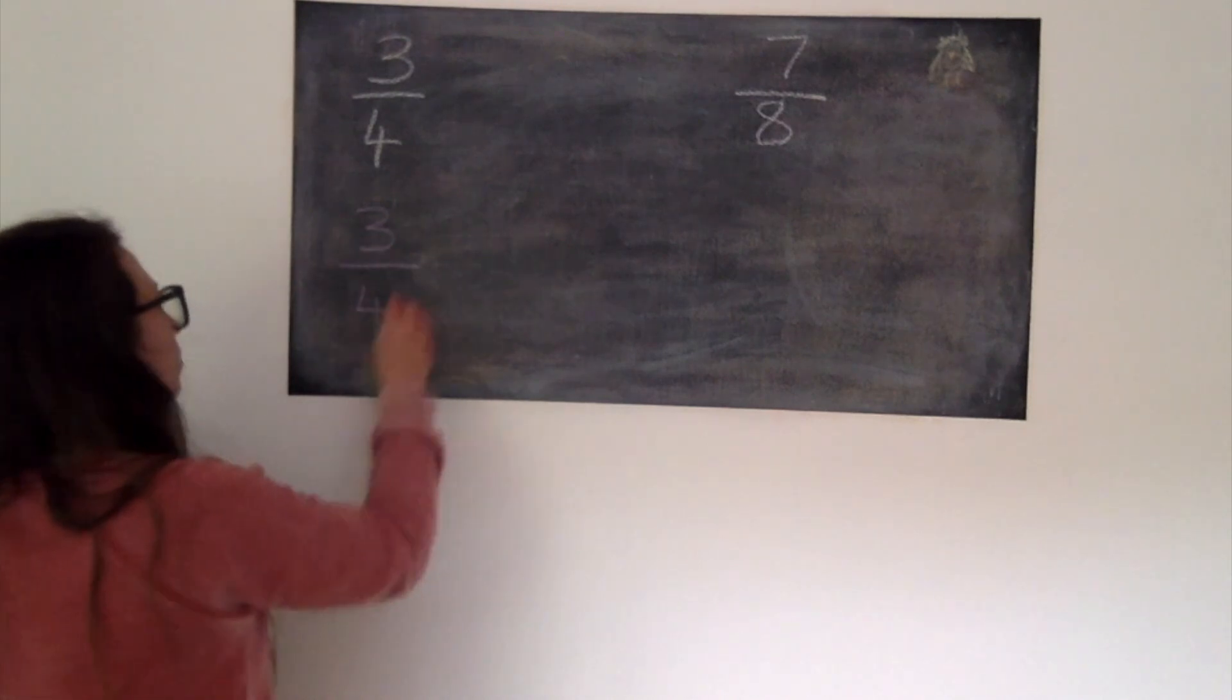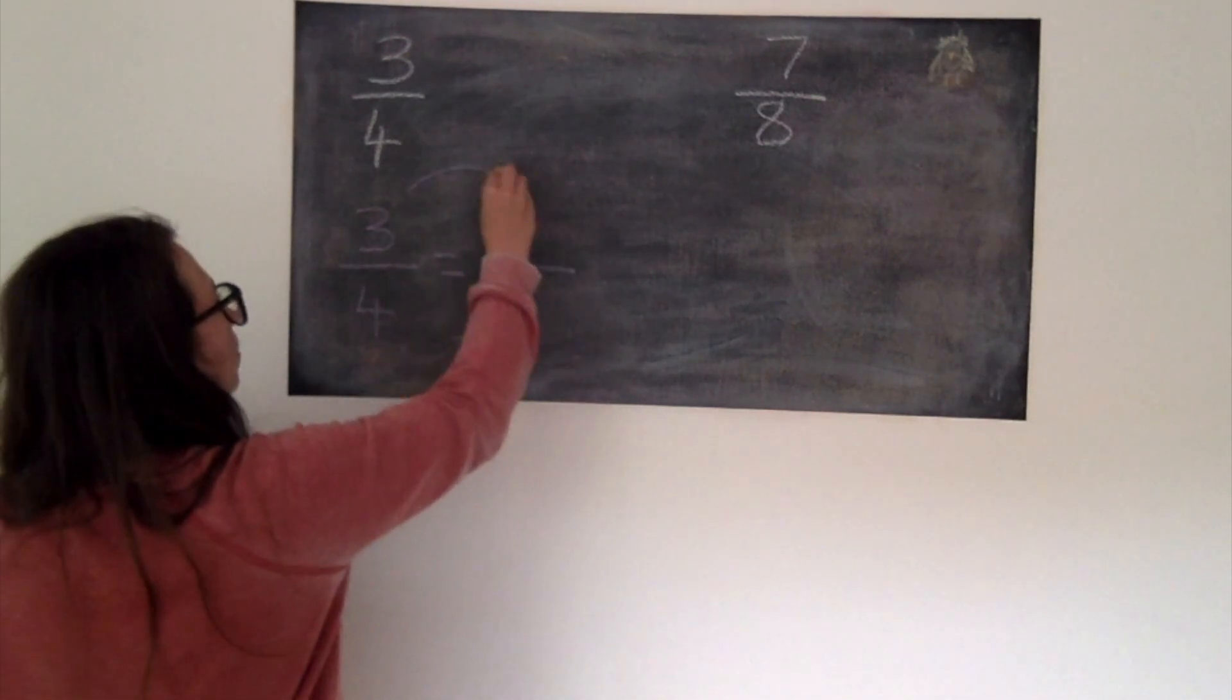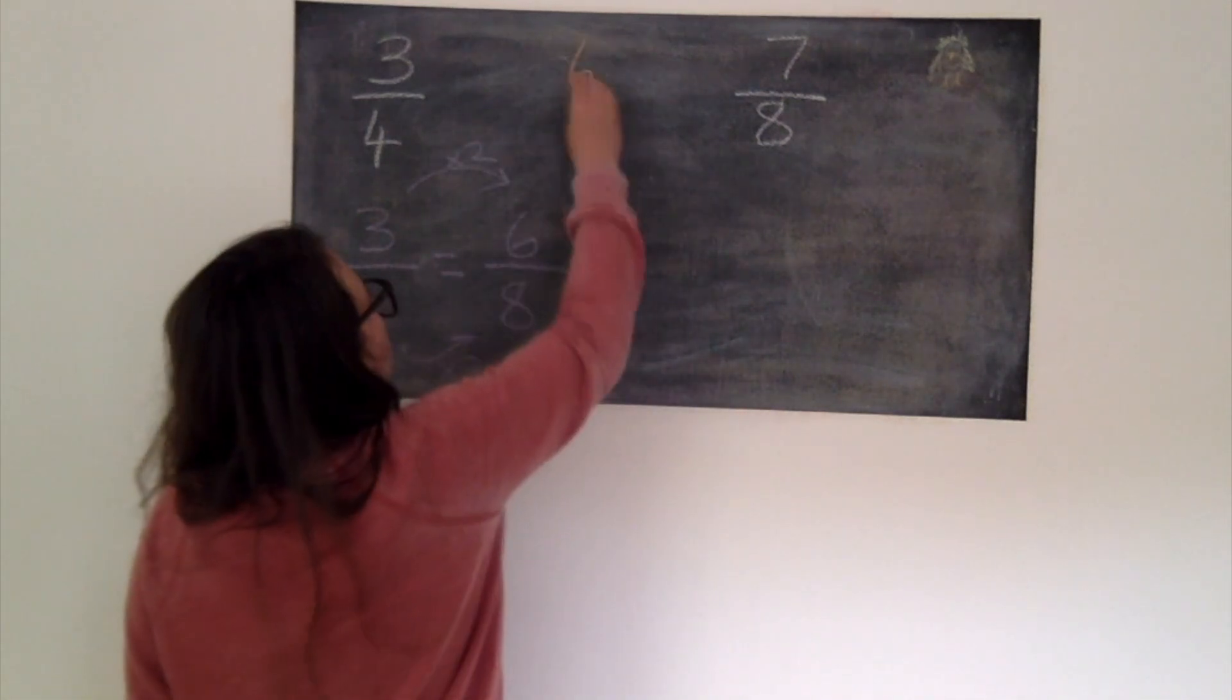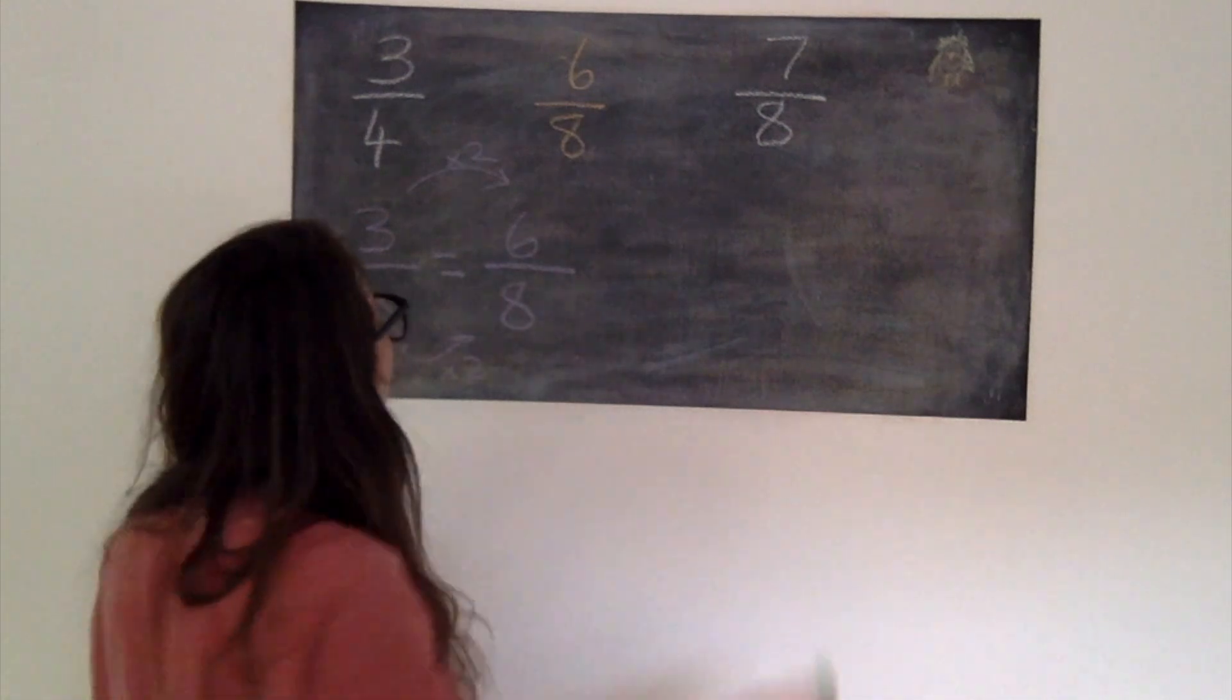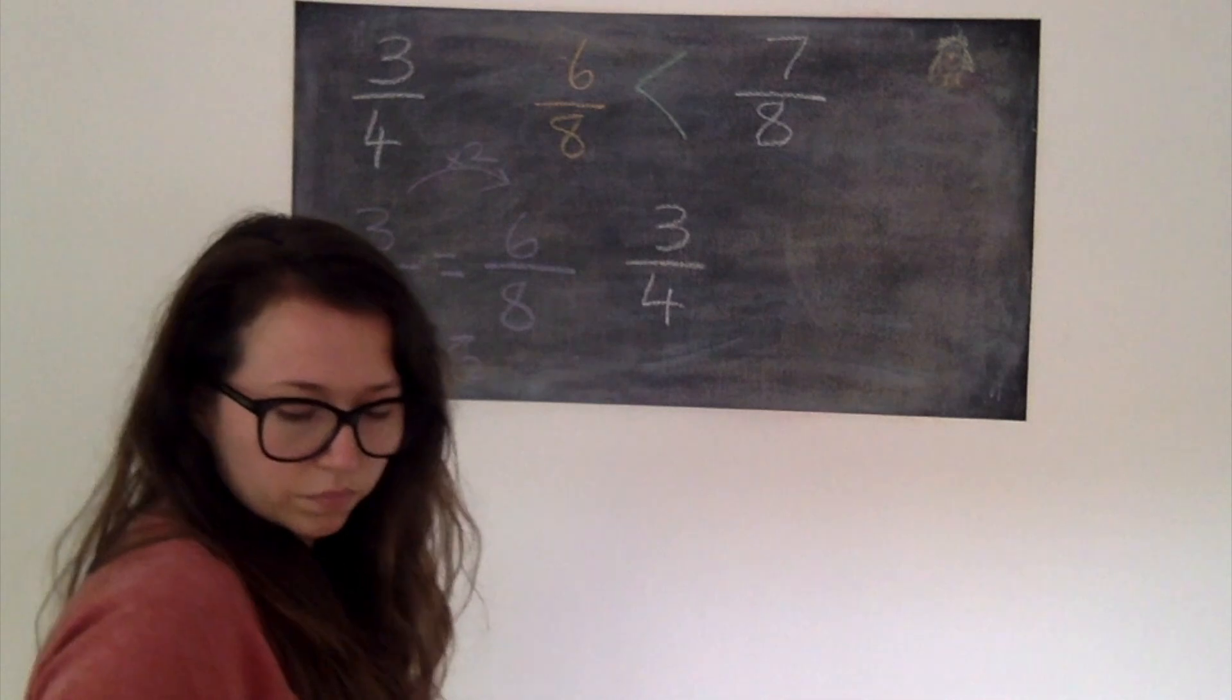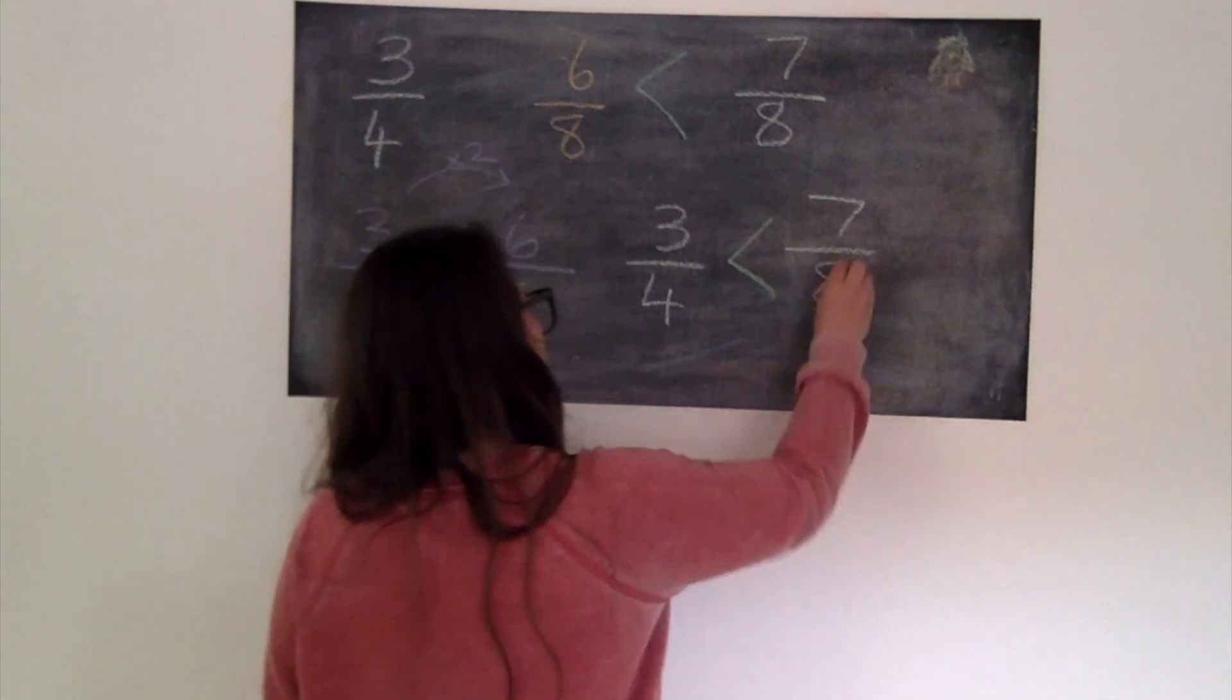Hopefully you recognized that you needed to turn the 3/4ths into 8ths. So using learning from yesterday we should know that 3/4ths is the same as 6/8ths by timesing them by 2. Then we have 6/8ths and 7/8ths to compare. We know that 7/8ths is bigger and so 7/8ths is greater than 3/4ths.